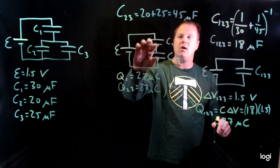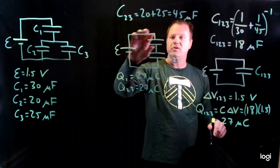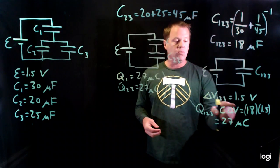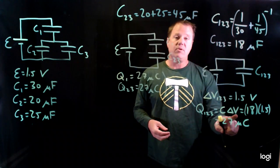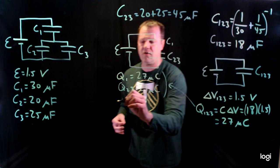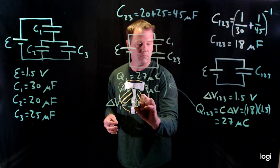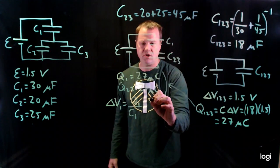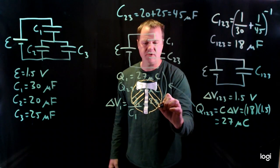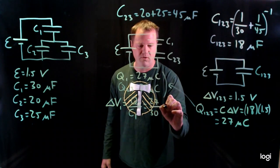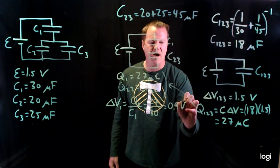But they're series, so the potential difference gets split. That 1.5 volts from the battery gets divided between these two. So I have to calculate what that will be. So we'll use this formula to solve for potential difference in order to calculate the potential difference. So we have a charge of 27 microcoulombs and a capacitance of 30 microfarads. So it's micro over micro. So I'll get back to SI units, 0.9 volts.